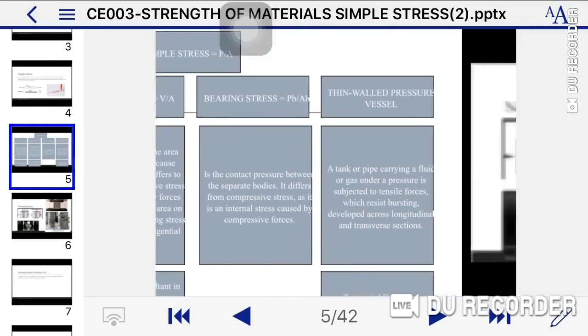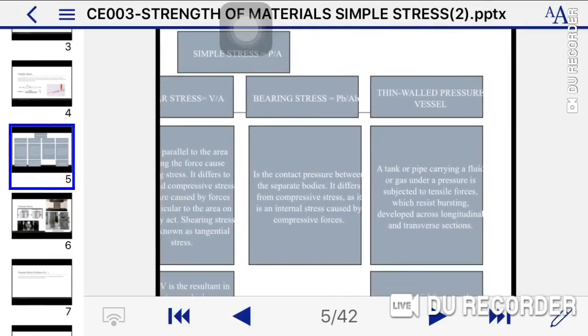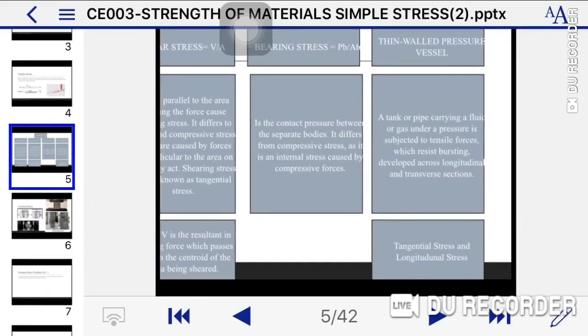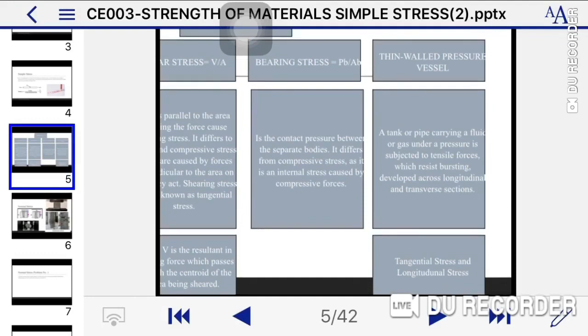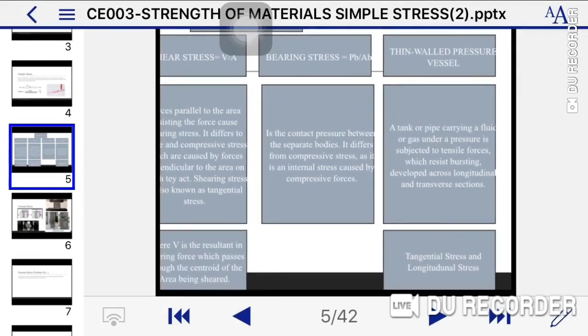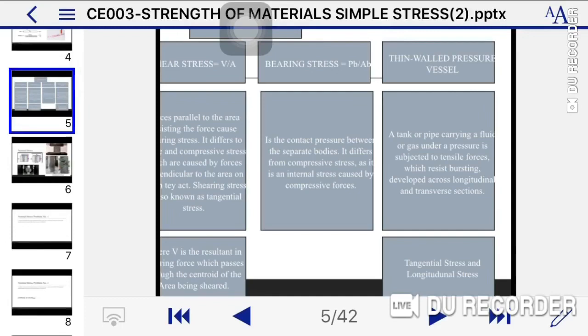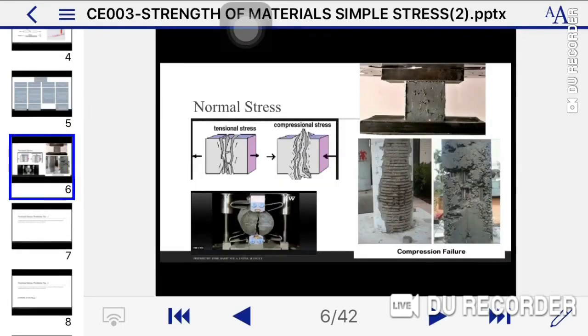Last is the thin-walled pressure vessel. A tank or pipe carrying a fluid or gas under pressure is subjected to tensile forces which resist bursting, developed across longitudinal and transverse sections. Under thin-walled pressure vessels, we have two types of stresses: tangential stress and longitudinal stress.